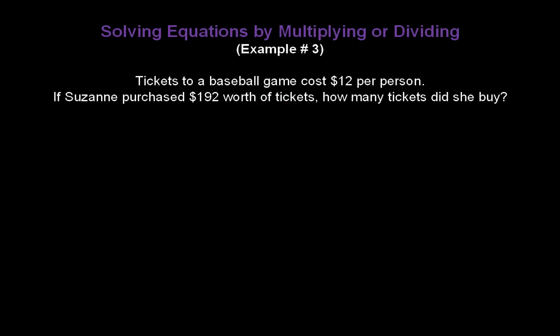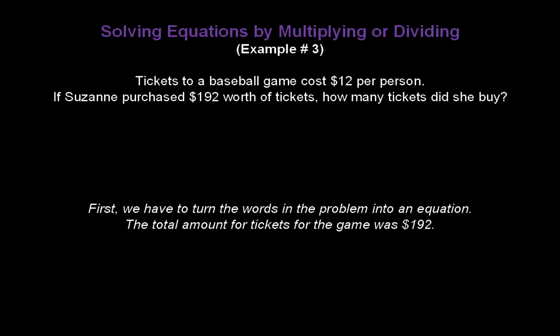And let's do a final word problem example. Tickets to a baseball game cost $12 per person. If Suzanne purchased $192 worth of tickets, how many tickets did she buy? Now, first we have to turn the words in the problem into an equation that we can solve. The total amount for tickets for the game was $192. Total means equals. So we can start writing our equation equals 192.